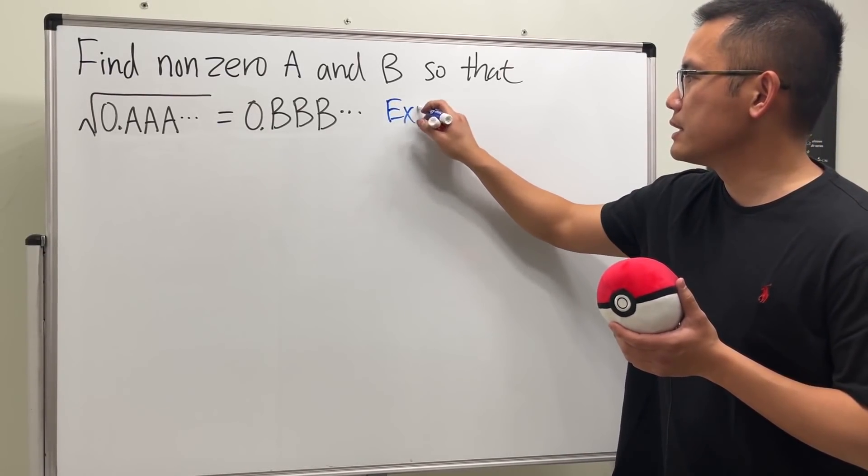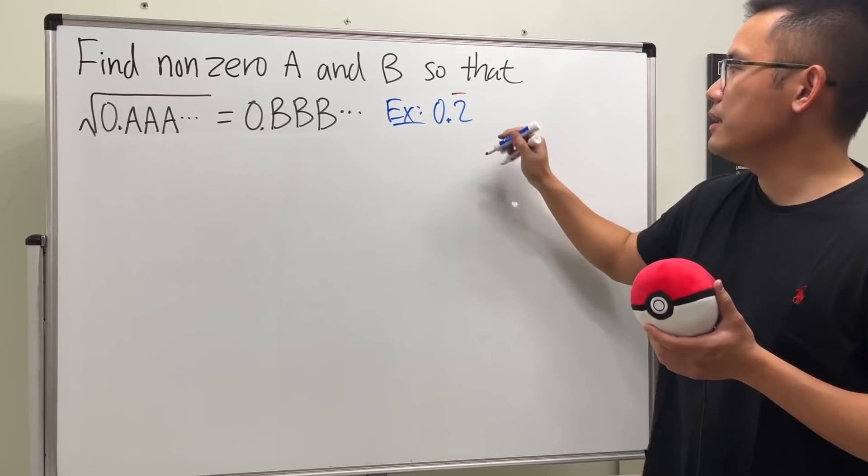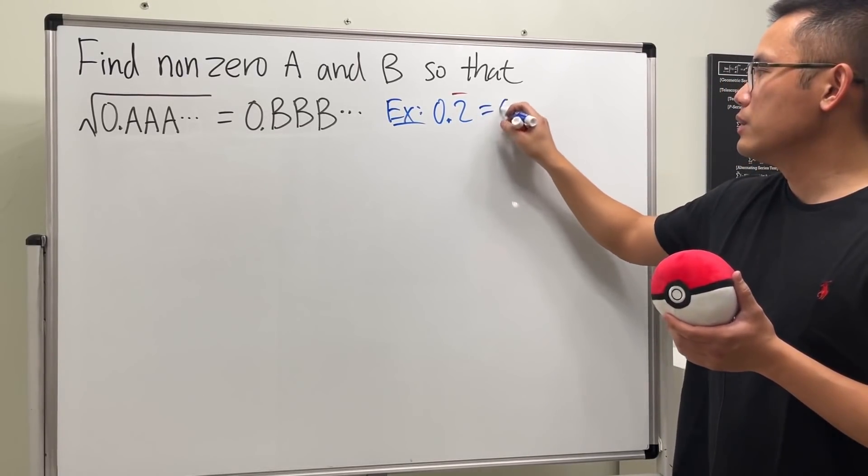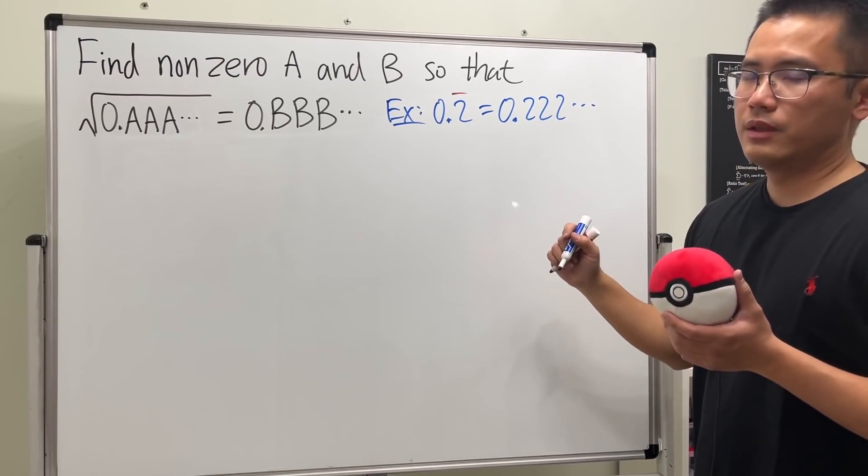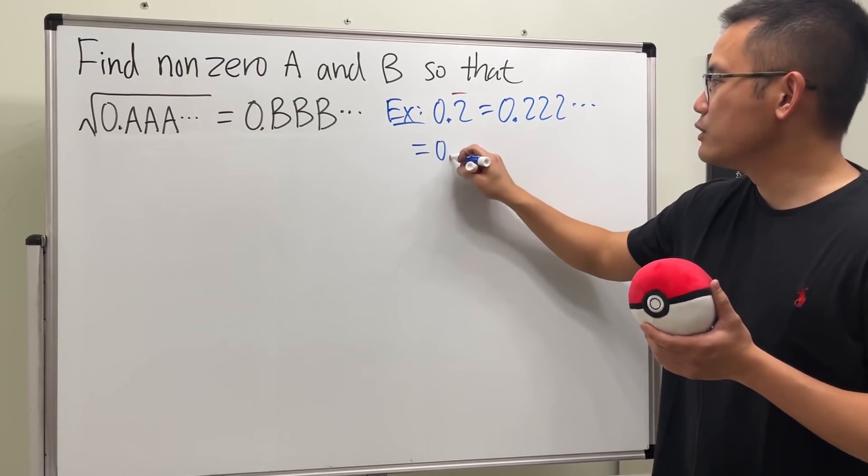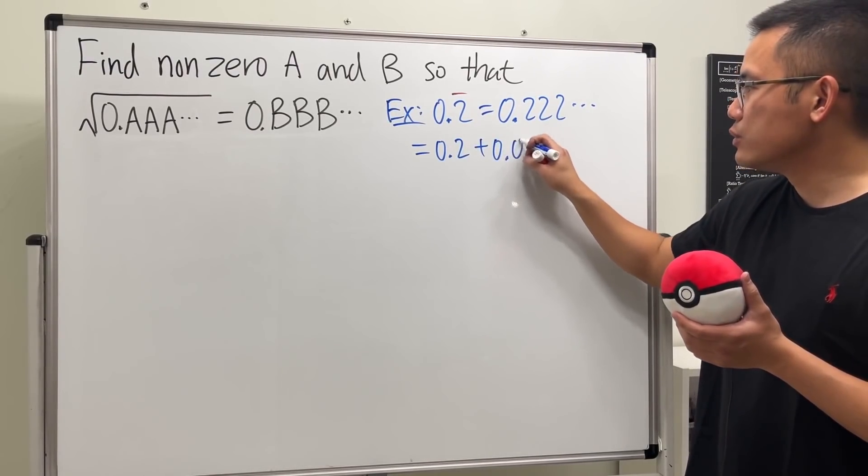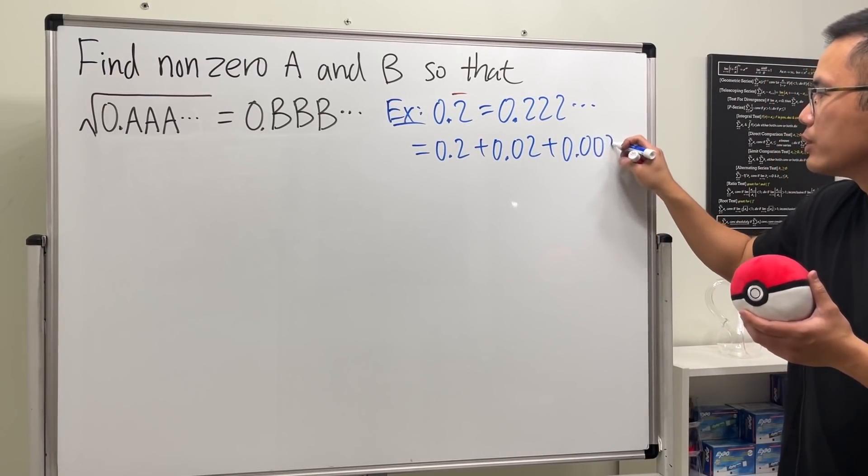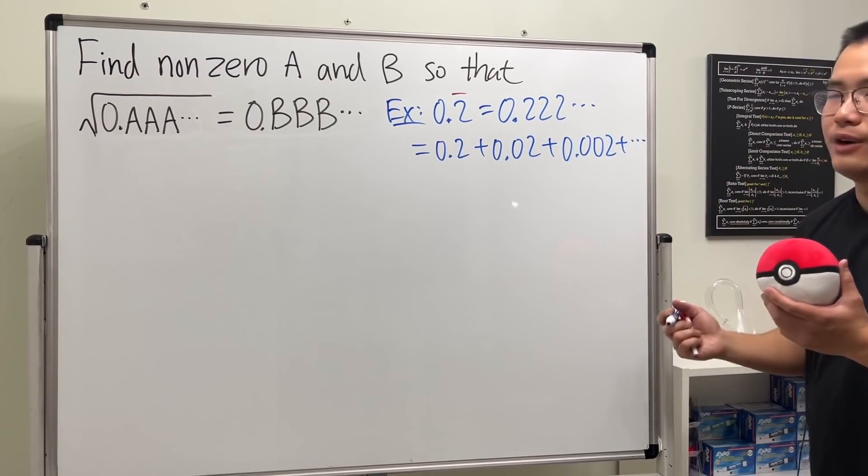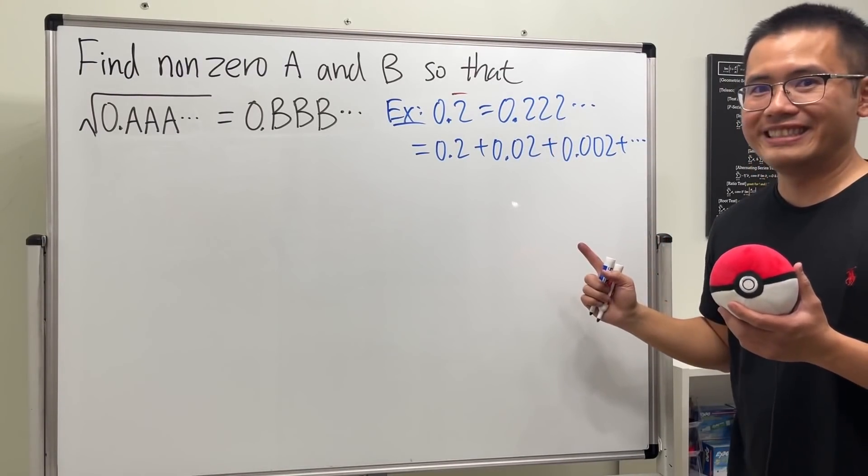Let me give you an example on the side first. If we have 0.2 repeating, this means 0.222... forever. This means we have 0.2, then add 0.02, then add 0.002, and so on forever. That's what this means. Now, do we see it?